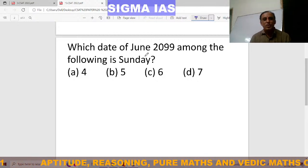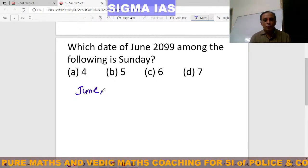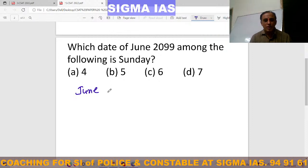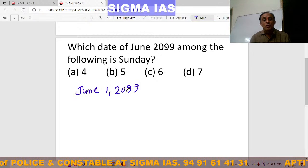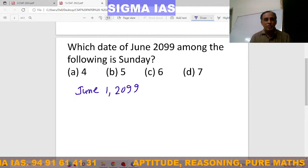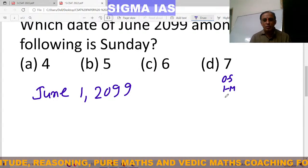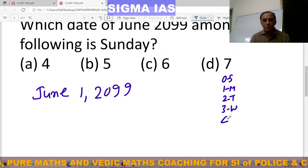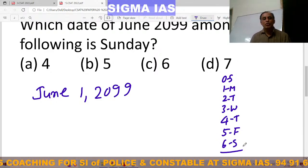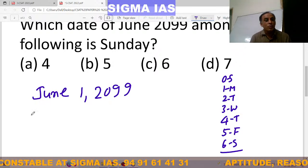To solve this, we first need to find what day June 1st, 2099 falls on. So first, find the number of odd days up to June 1st, 2099. The calculation is: 2000 years plus 98 years, plus the 99th year's months — January, February, March, April, May, and only one day in June.